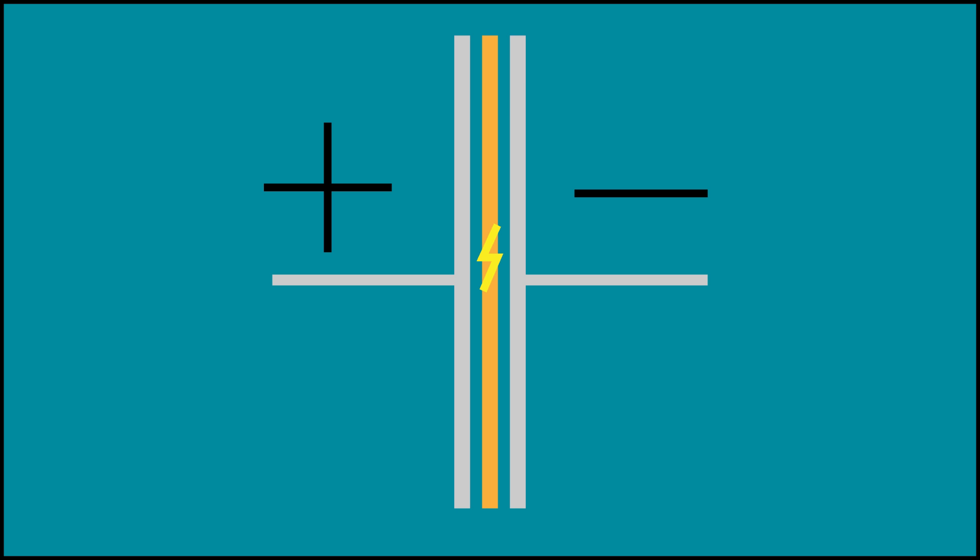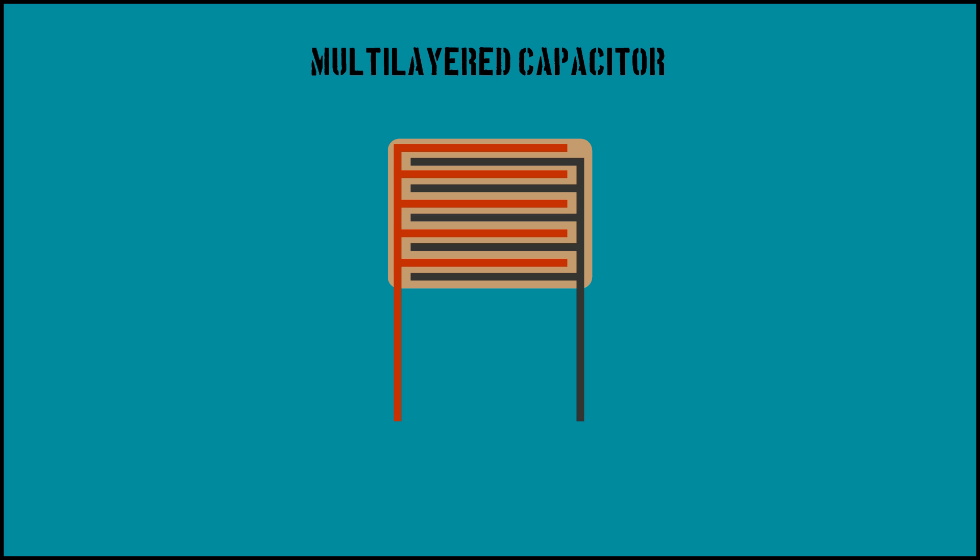Increasing the surface area of the conductors increases capacitance. To maximize capacitance in a small space, capacitors utilize multilayering. In this diagram, you can see how multilayering works. This employs the same principles of conductor, insulator, conductor, just repeated many times.